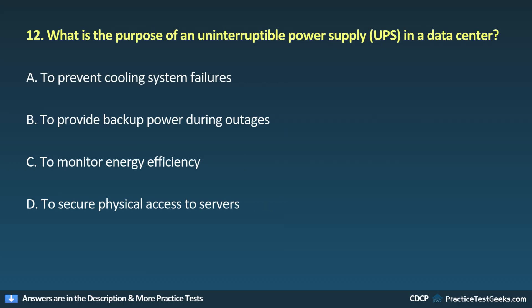Question 12. What is the purpose of an uninterruptible power supply (UPS) in a data center? A. To prevent cooling system failures. B. To provide backup power during outages. C. To monitor energy efficiency. D. To secure physical access to servers.